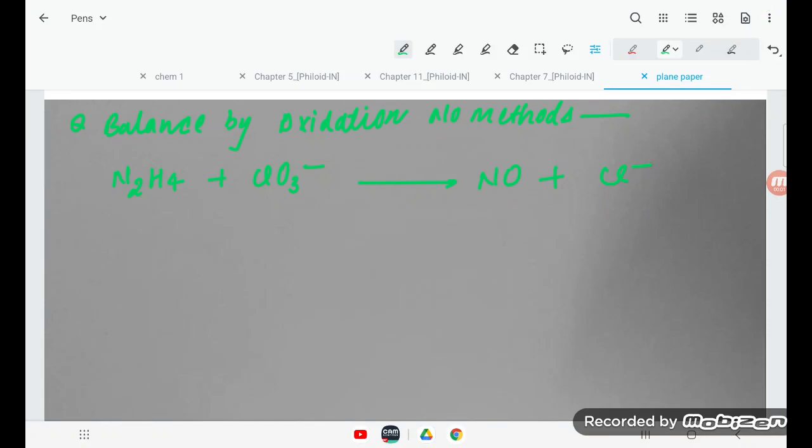Hello students, let's try to understand one problem using the oxidation number method in acidic medium. You can see the oxidation number in this case. If you see the oxidation number, in this case it is minus 2 and here is plus 2.